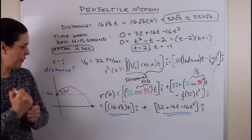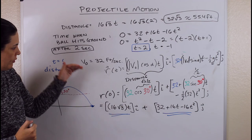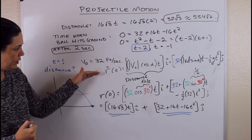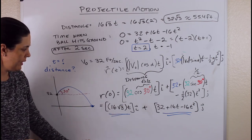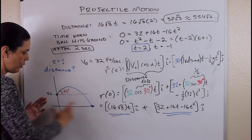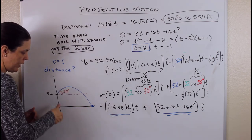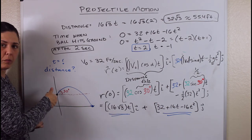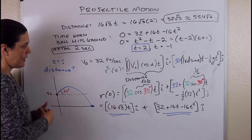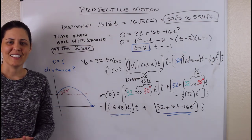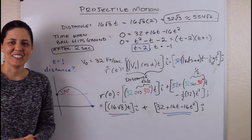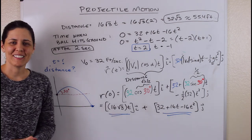So we used our vector-valued function to break this down into a horizontal and vertical component, and then used that information to answer the question. That's it for this one — thanks for watching.